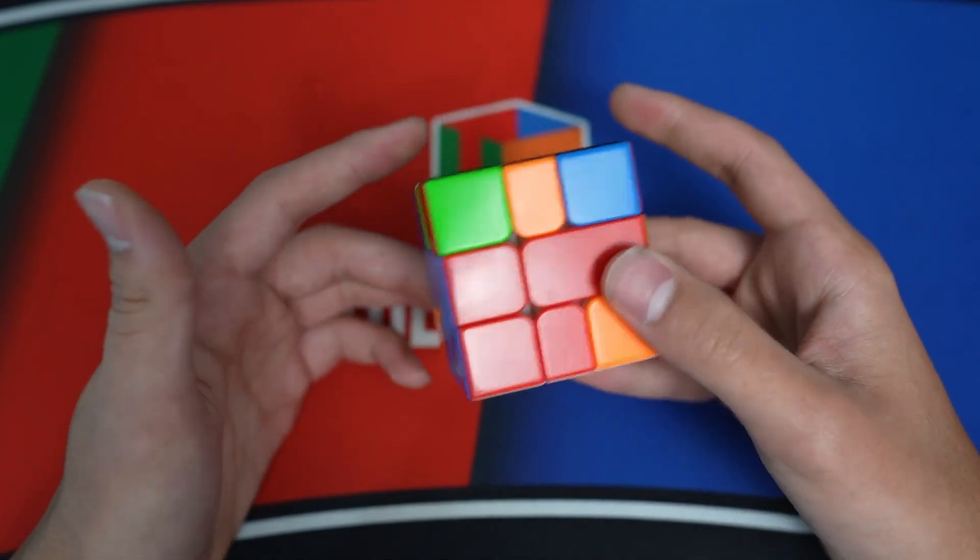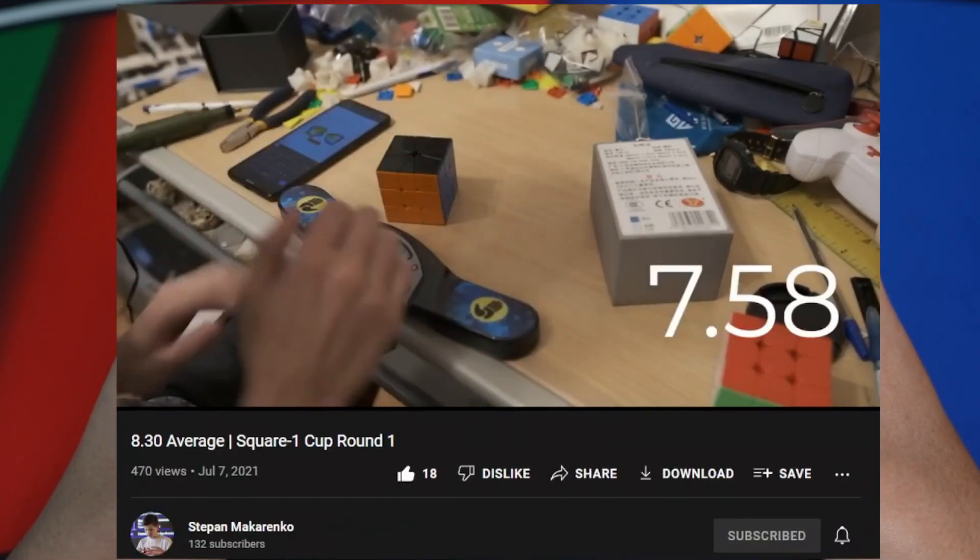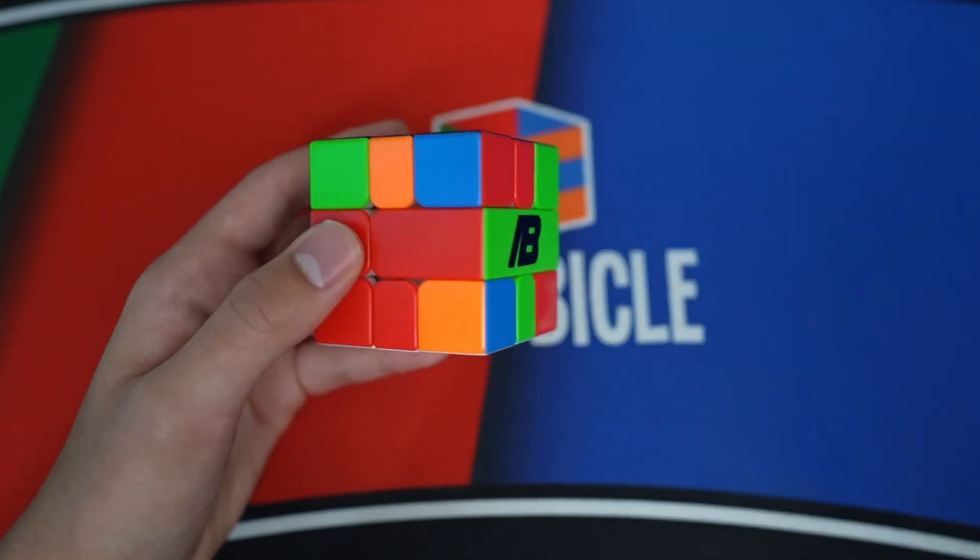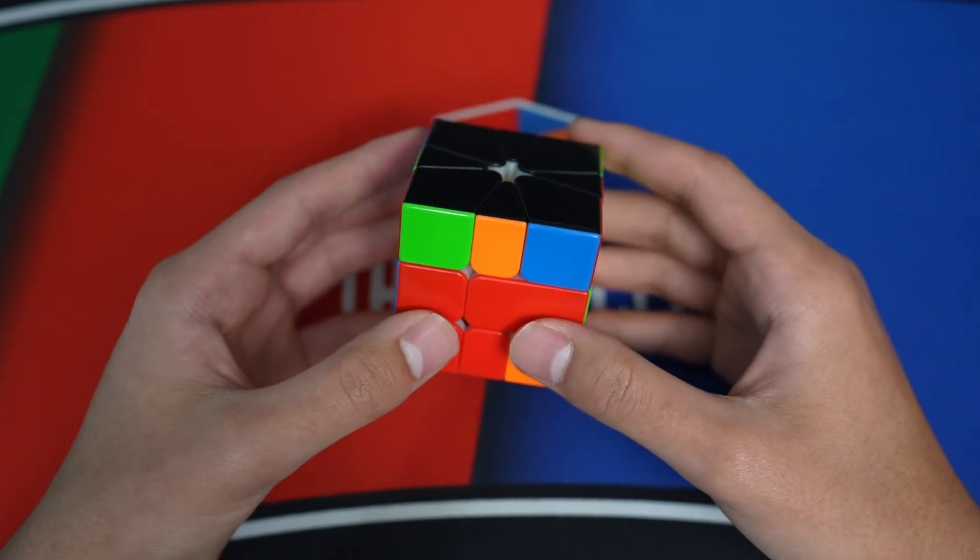Maka Naming is a PBL naming system created by Stepan Makarenko that uses intuitive visual cues to name every PLL that has a different mirror, such as U perms, J perms, A perms, R perms, G perms, etc.